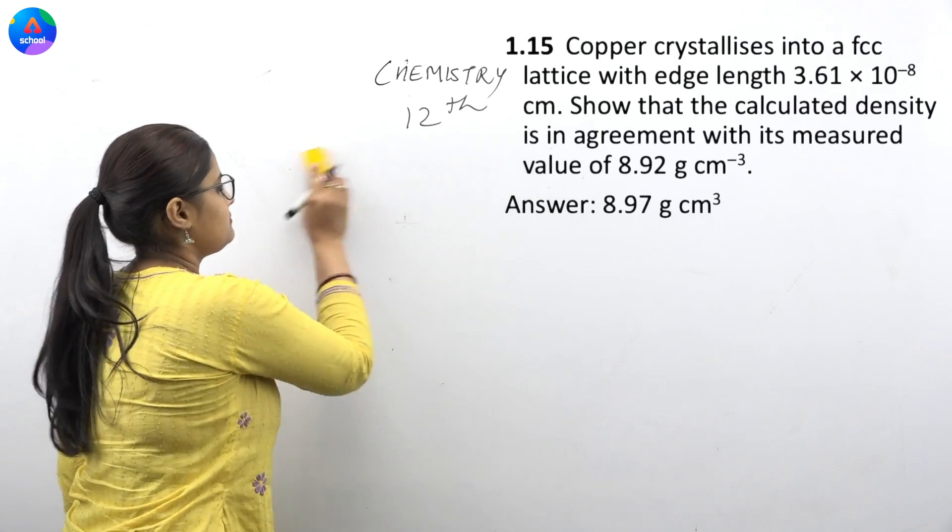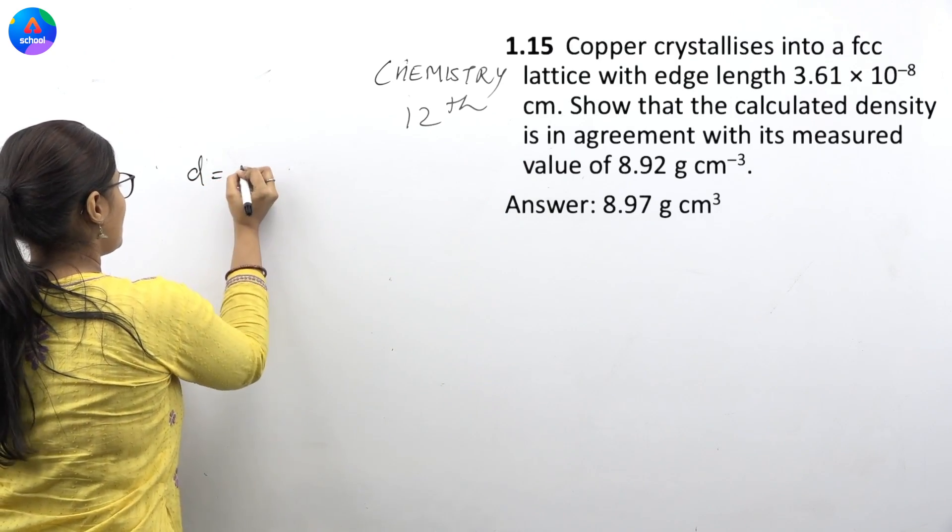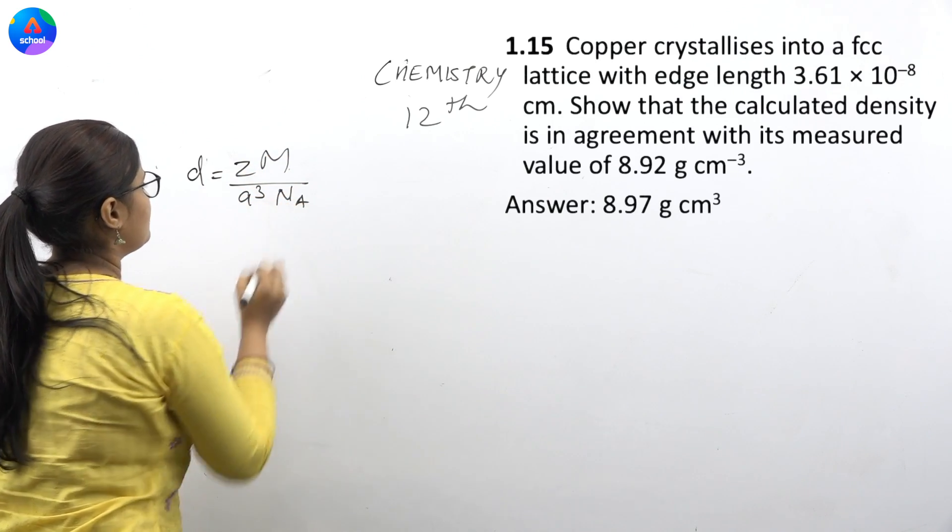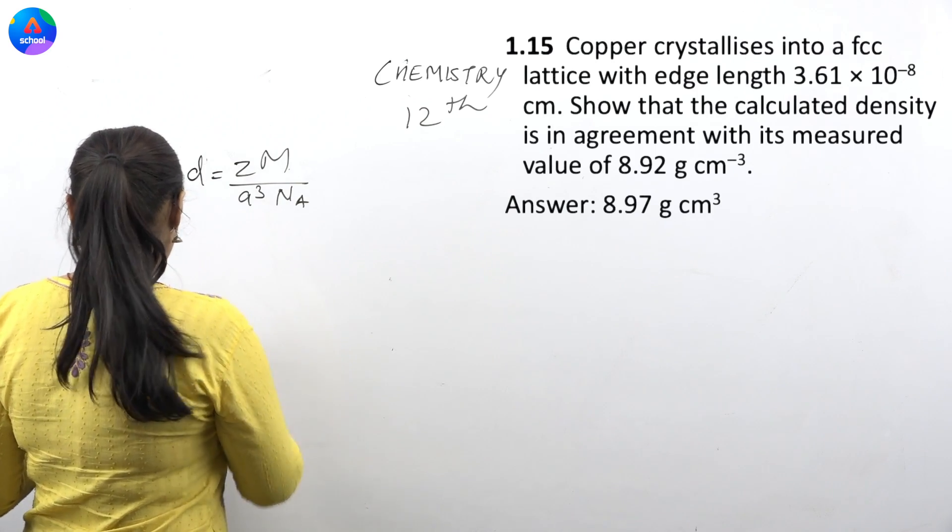So let's solve this question, which means that you are asking for D. So please, your formula, you have to use D equals Z into M upon A cube and Na. So we will put it and solve this question. Let's go, let's solve the question.